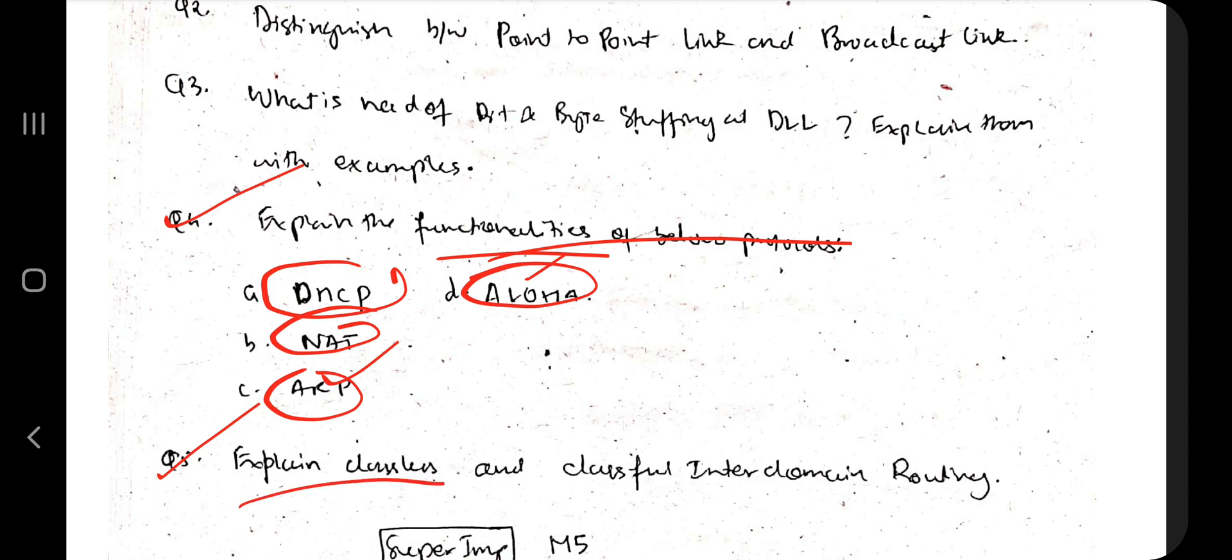Moving on to the last question, which is explain classless and classful inter-domain routing. What is classless and what is classful inter-domain routing? You've explained in depth the basic differences between them, when it is needed, what are the parameters of it, what is the format for classful and classless IP address, and in which context it is used. Basically, these are the key points you have to cover.